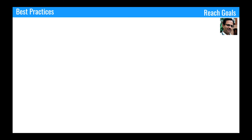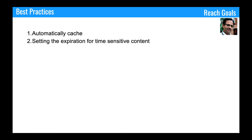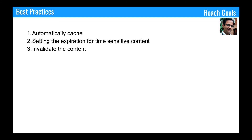Now let's look at best practices to consider while setting up CDN. First, automatically cache the static content — this improves performance. Second, set expiration times for time-sensitive content; for example, front page images might change frequently, whereas logos will not, so you don't need an expiration time for logos. You can also change expiration settings at the backend when needed. Third, invalidate the content when required — rather than waiting for expiration, this refreshes CDN content immediately. Also, consider security configuration and use signed URLs when you need to secure the content.